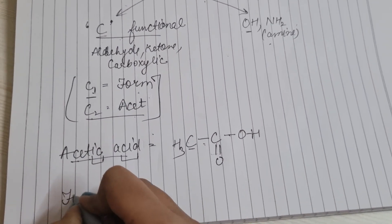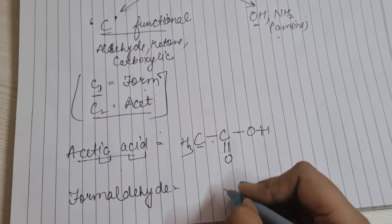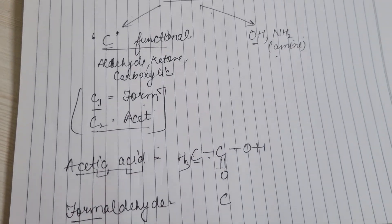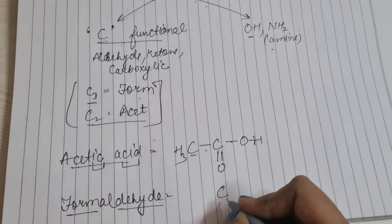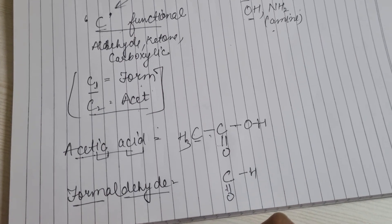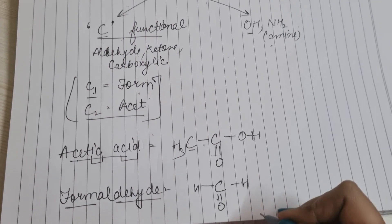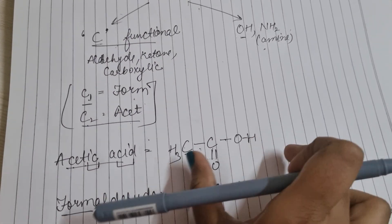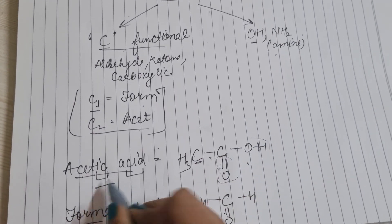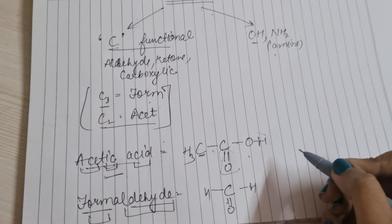Formaldehyde: 'form' मतलब single carbon (carbon no. 1), aldehyde functional group लगाओ। Aldehyde लगाने के बाद valency पूरी करने के लिए एक hydrogen और लगाओ। This is the structure of formaldehyde। इसका उल्टा भी कर सकते हो — structure देखकर name बताओ।